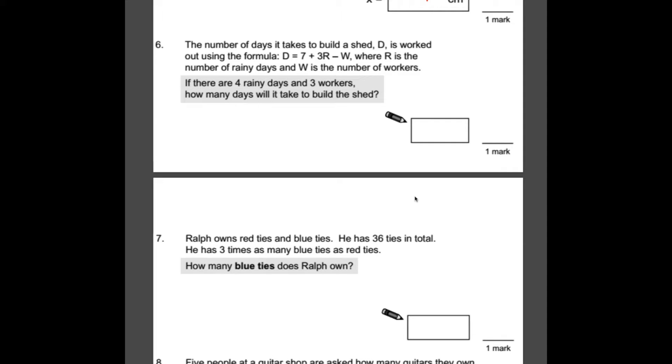Number six, it looks fairly complicated from the outset, but bear with me. It isn't as difficult as it looks. The number of days it takes to build a shed, D, is worked out using the formula D equals 7 plus 3R minus W, where R is the number of rainy days and W is the number of workers. If there are four rainy days and three workers, how many days will it take to build the shed? All we need to do is insert the numbers 4 and 3 into our equation that they've already given us. So D is the number we are trying to find. D equals 7 plus 3R. Now 3R means 3 times R. Now R is rainy days. We've been given four rainy days. So it's 7 plus 3 times 4, which is 12.